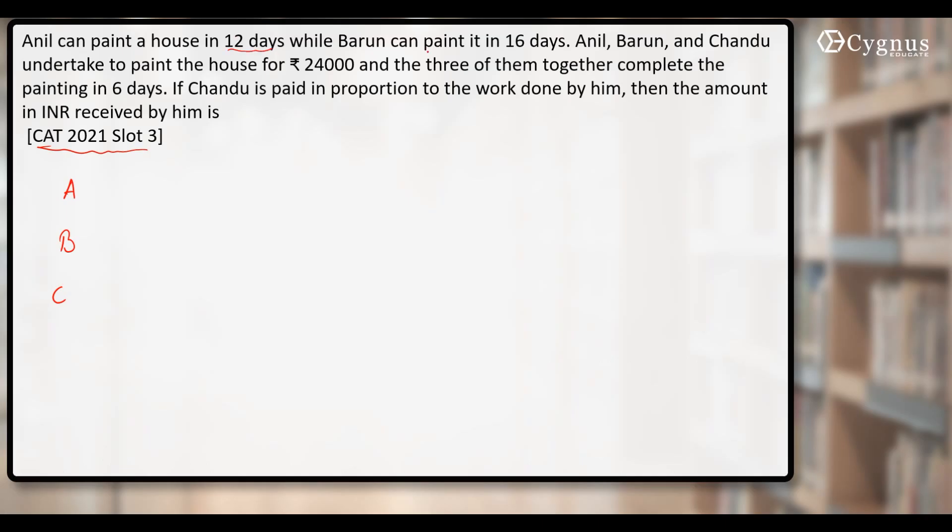Anil can do the work in 12 days while Barun can do the same work in 16 days. The efficiency of Chandu is not given, so let's assume that the total work is the LCM of 12 and 16, that is 48 units.